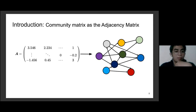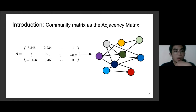Returning to the community matrix, we note it contains the interactions of all species, and in fact this matrix can be used as an adjacency matrix for a network we wish to construct.